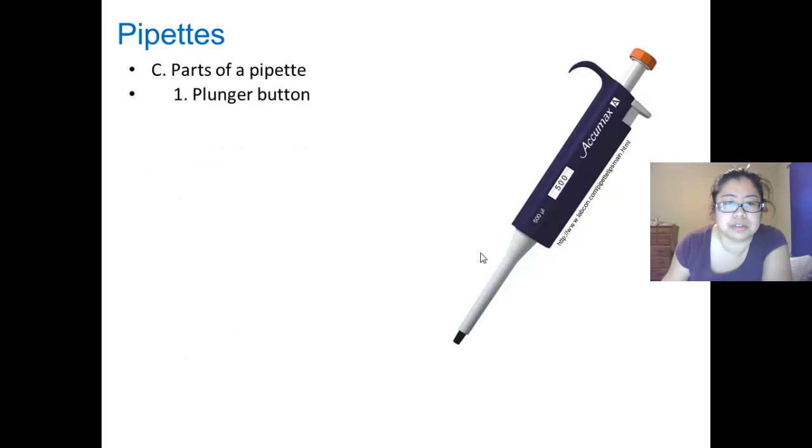Parts of a pipette. First is the plunger button. The plunger button is used to withdraw and aliquot amounts of liquid.